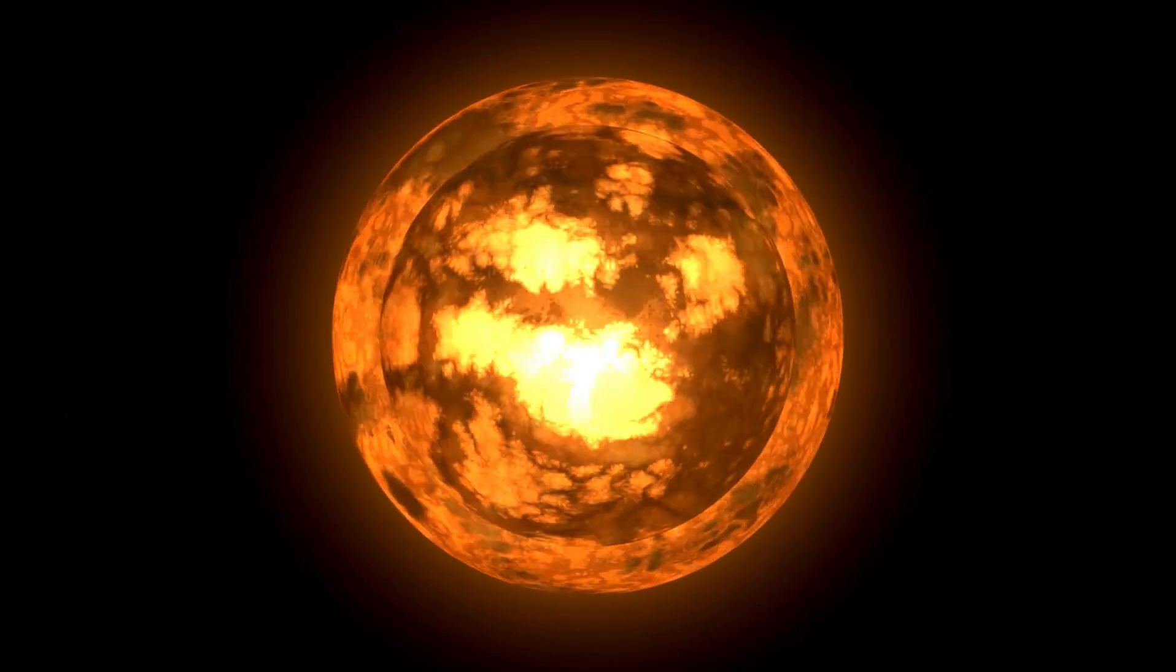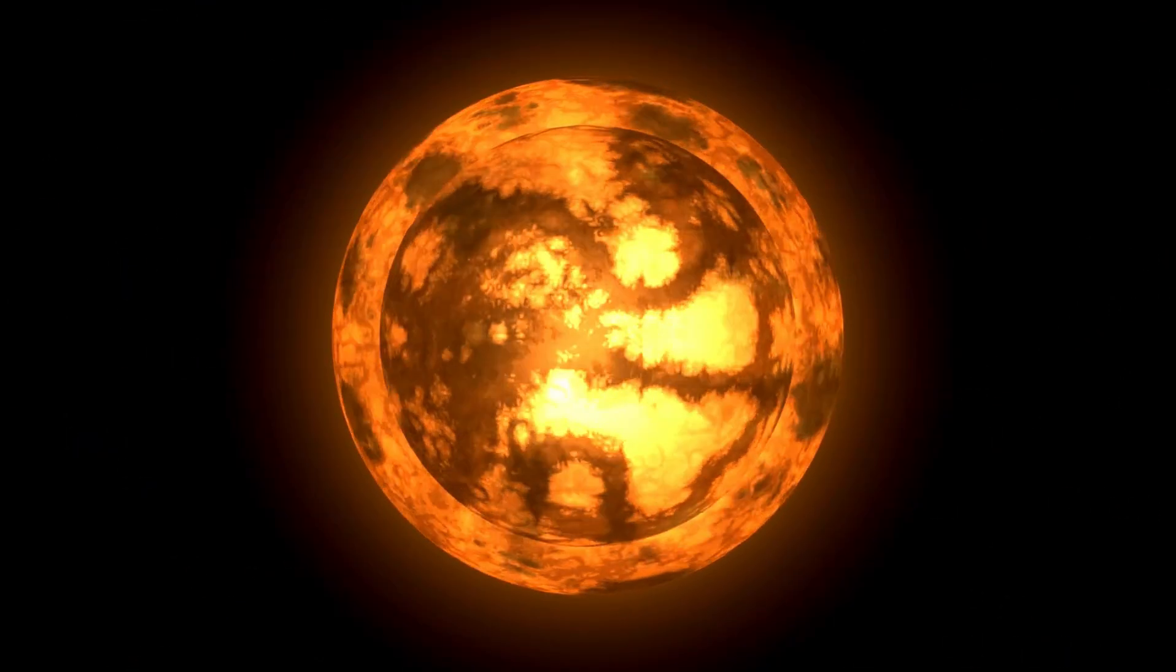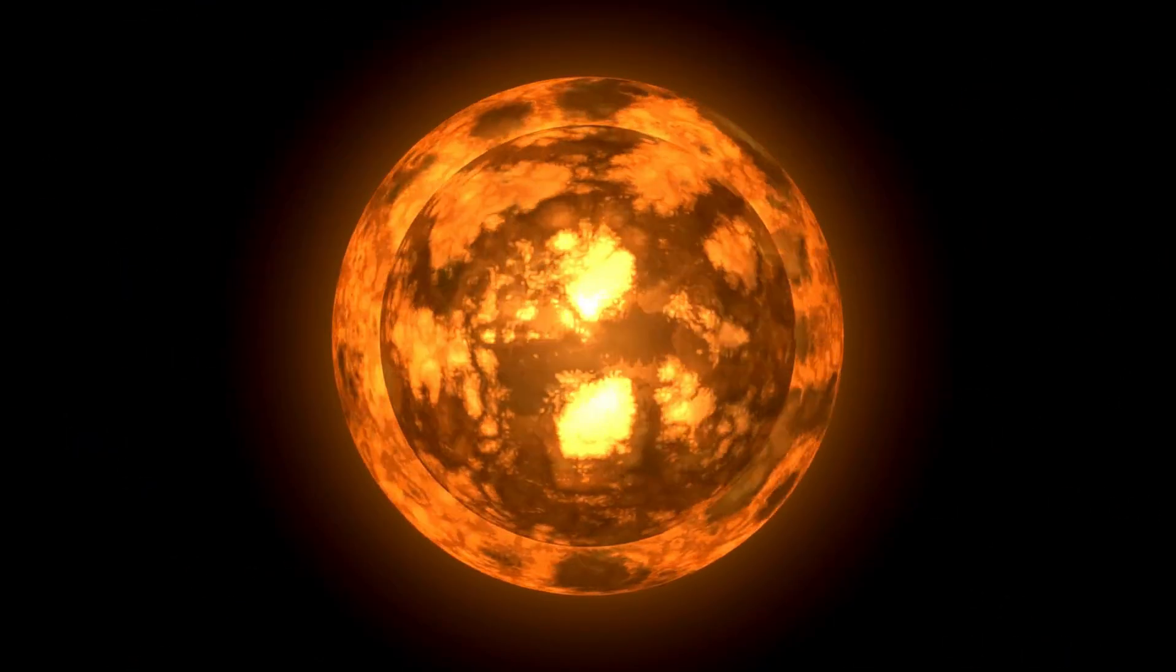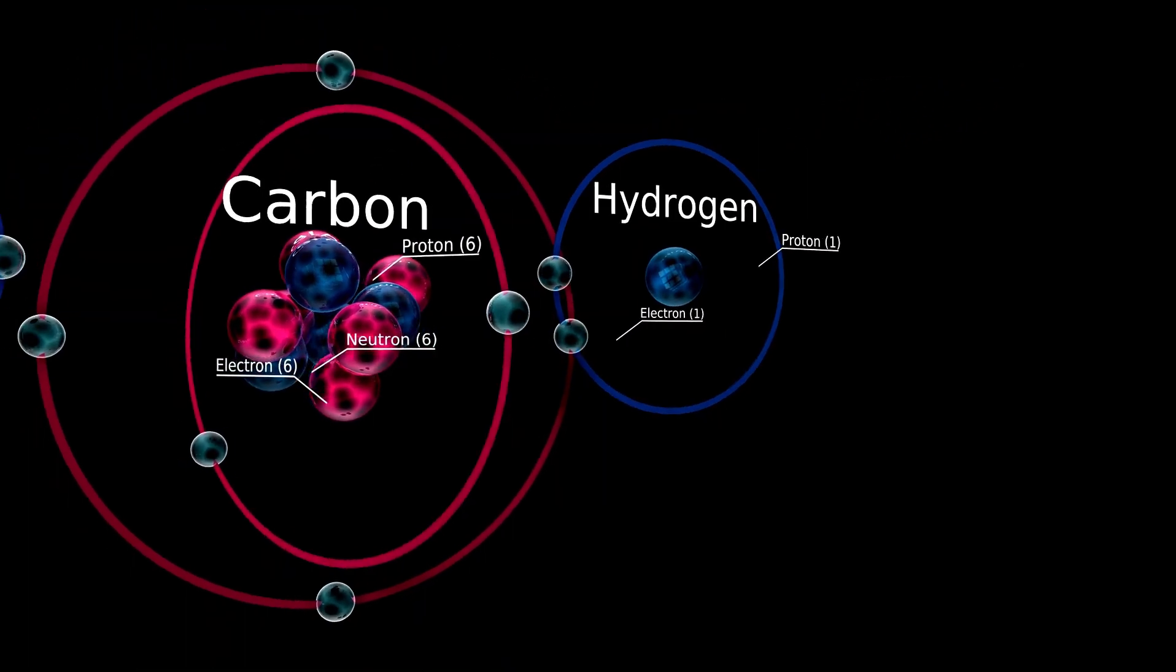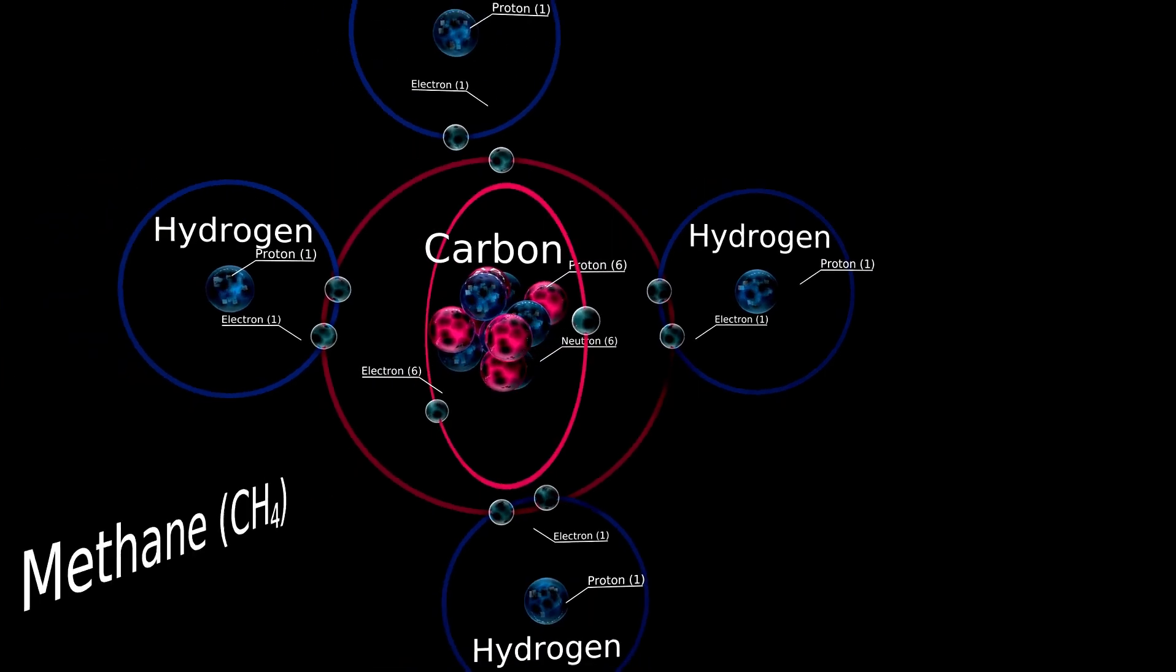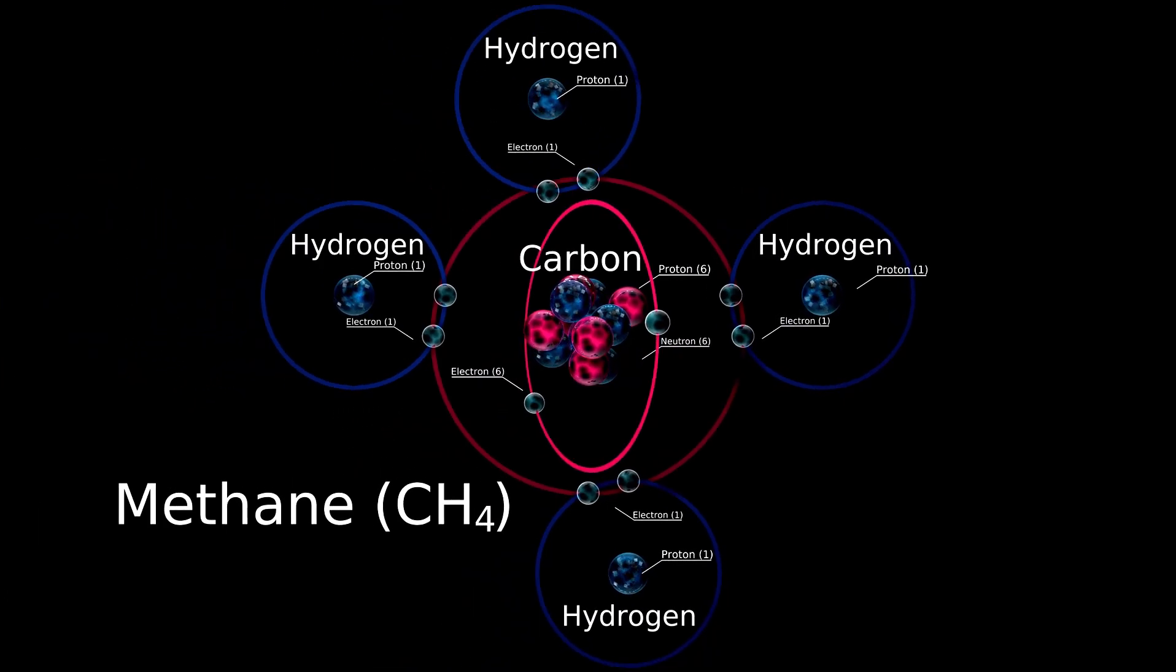In the case of Betelgeuse, a red supergiant nearing the end of its life cycle, this balance has become increasingly unstable. As the star depletes its core hydrogen fuel, the nuclear fusion processes that sustain it undergo significant changes. When hydrogen fusion slows in the core, radiation pressure decreases, causing the gravitational pull to momentarily gain the upper hand. This results in the contraction of the star's outer layers.